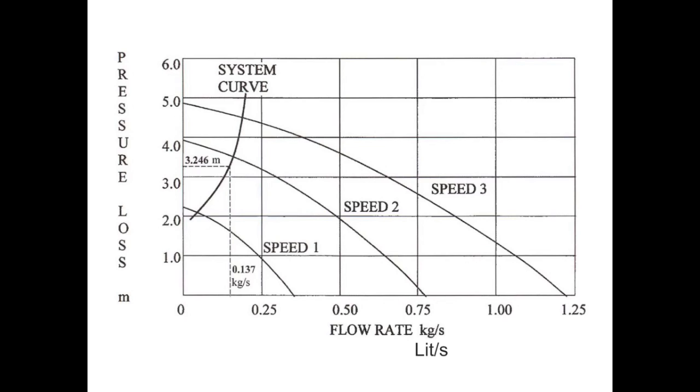If we had set the speed setting to speed 3, we would have had too much circulation. Likewise, if we set the speed setting to speed 1, we would have had insufficient circulation within our circuit.